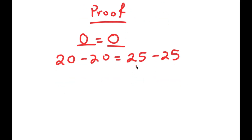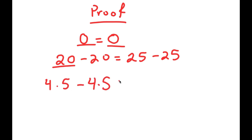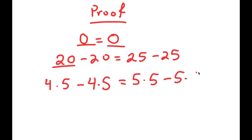From here, I'm going to rewrite 20 as 4 times 5. So now I get 4 times 5 minus 4 times 5 is equal to 25. I'm going to rewrite this as 5 times 5. So I get 4 times 5 minus 4 times 5 is equal to 5 times 5 minus 5 times 5.